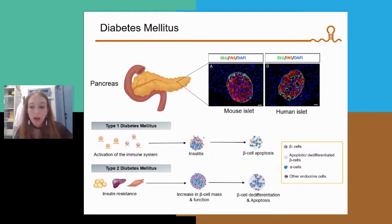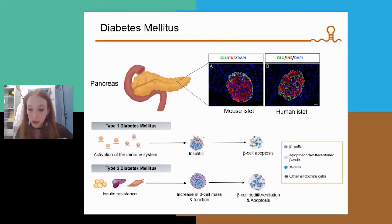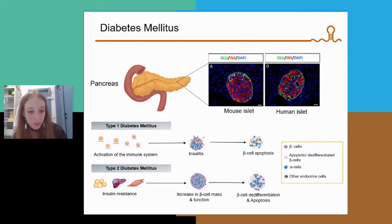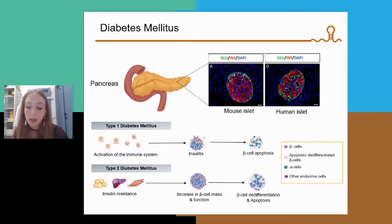Type 1 diabetes is produced by the destruction of beta cells by the immune system, while type 2 diabetes usually occurs when there is an exhaustion of beta cells that try to compensate for insulin resistance. Although a subset of patients develop type 2 diabetes despite near normal insulin sensitivity.